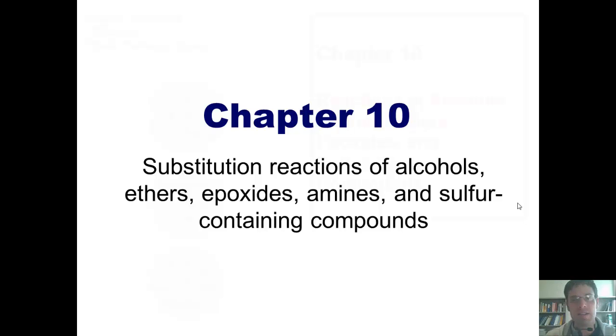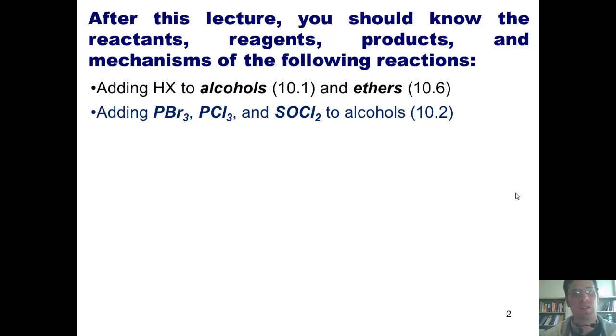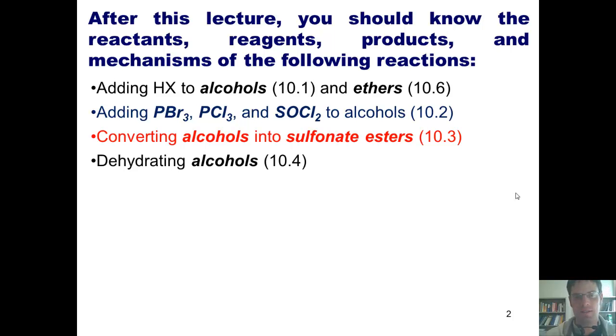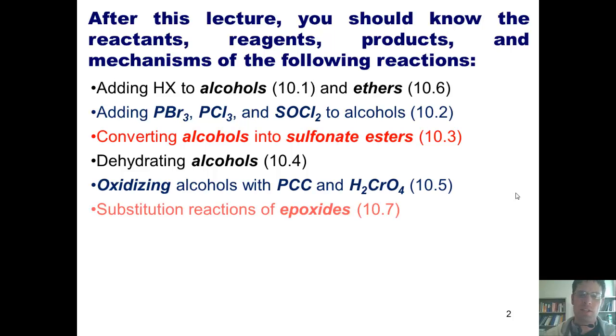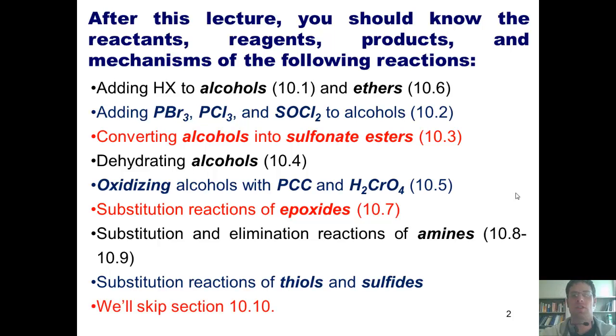In this chapter, we're going to learn about various substitution reactions involving alcohols, ethers, epoxides, amines, and sulfur-containing compounds. After this lecture, you guys should know the reactants, reagents, products, and mechanisms of the following reactions: adding HX to alcohols and ethers; adding PBr3, PCl3, and SOCl2 to alcohols; converting alcohols to sulfonate esters; dehydrating alcohols; oxidizing alcohols with PCC and dihydrogen chromate, as well as some other oxidizing agents I'll show you; substitution reactions of epoxides; substitution and elimination reactions of amines; and substitution reactions of thiols and sulfides. And note, we will skip section 10.10. As I always do, each of these topics is covered in the respective sections of our text labeled here. So let's begin.